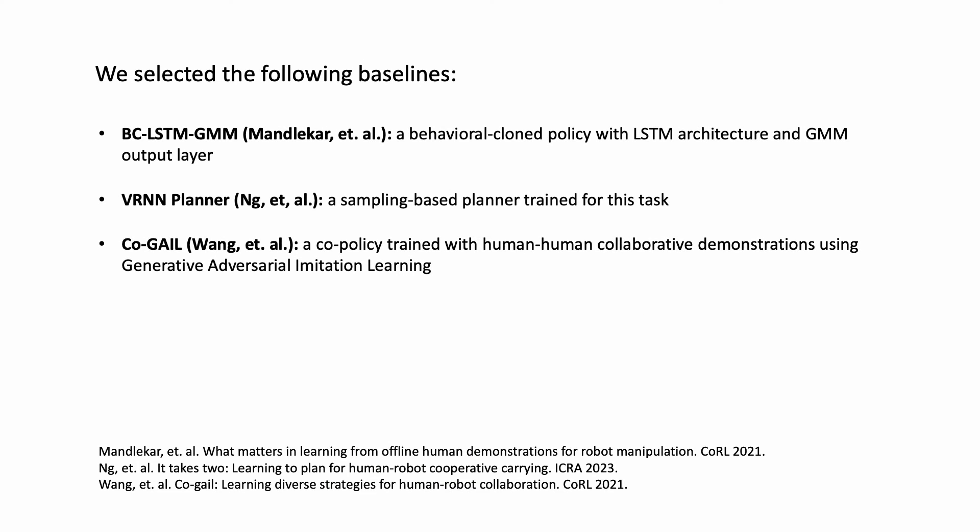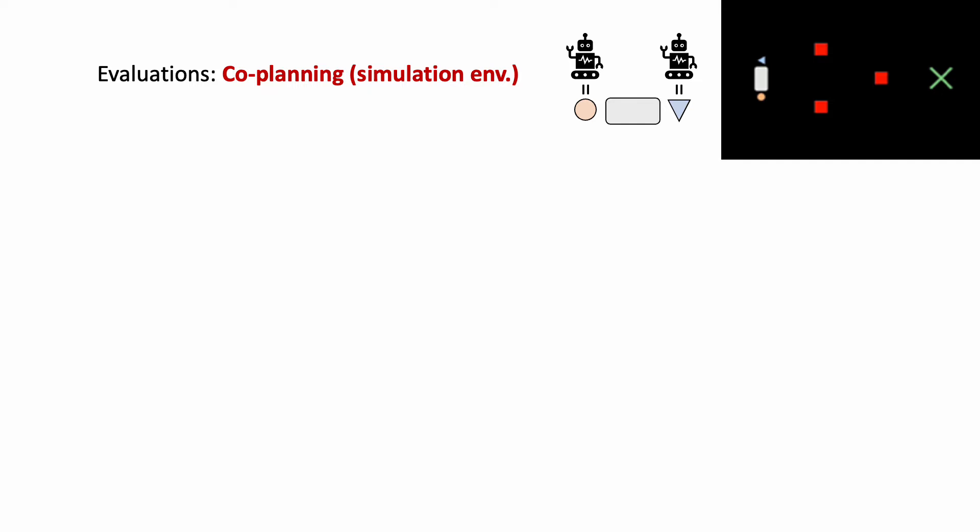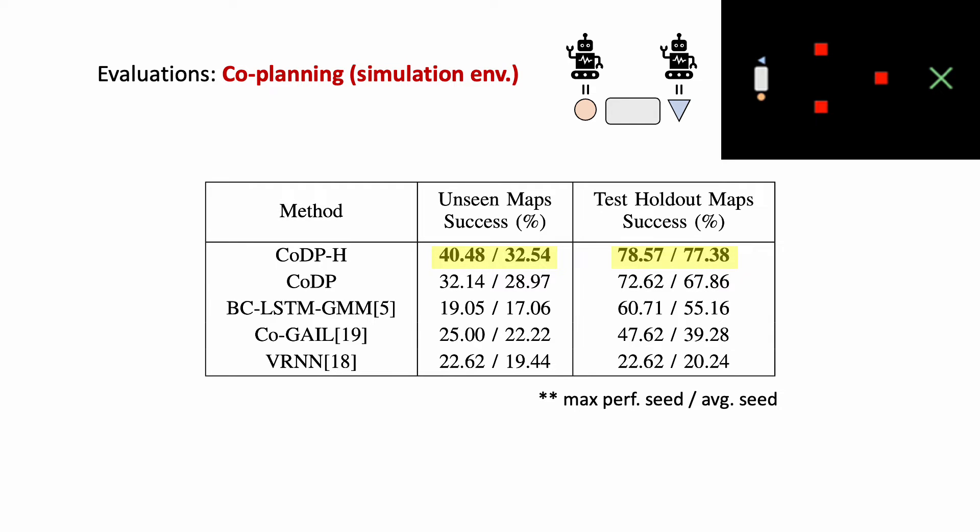We baseline against several state-of-art imitation learning methods and two versions of diffusion co-policy. First, we conducted a co-planning evaluation in a simulation environment where each method executed joint actions without a human in the loop. We found that diffusion co-policy conditioned on past human partner actions outperformed all state-of-art baselines.